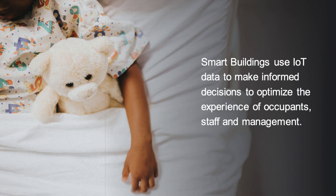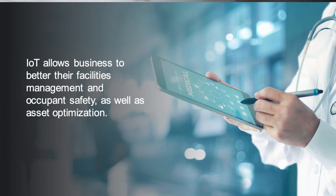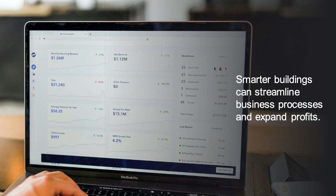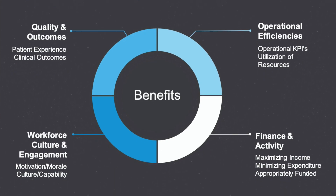As we think about smart IoT in buildings, we can think about how it's going to optimize the patient environment and make it a much better place to stay because of the control and environment they're working in. It also helps ensure occupant safety and asset optimization. It will help create smarter buildings by tracking financial performance, energy consumption, and all these things together — leading to quality outcomes, improved patient experience, operational efficiency, financial activities, and workforce culture, engagement, and optimization in a holistic way.